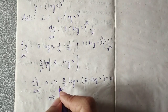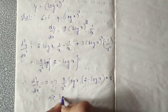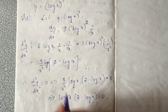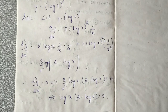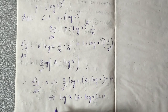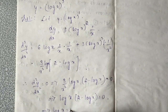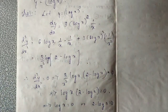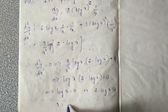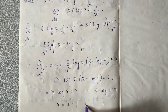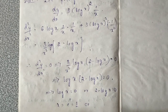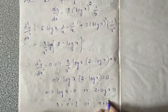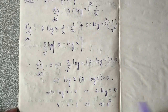Since 3 will not become 0 at any time, and 1 by x squared is also not equal to 0 for any x greater than 0, this implies either log x equal to 0 or 2 minus log x equal to 0. If log x equal to 0, then x equals e raised to 0, which is 1. Or if 2 minus log x equal to 0, then log x equals 2, so x equals e squared.